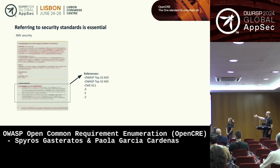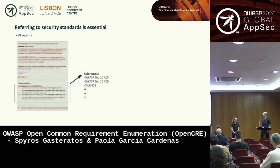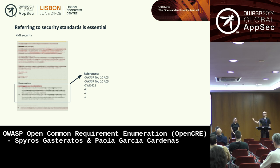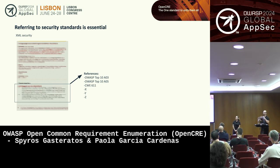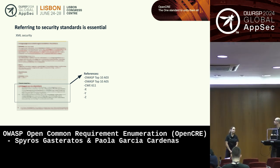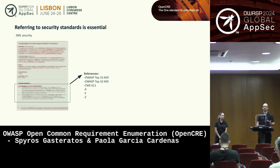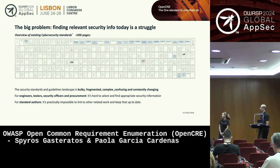Let's start from the beginning. A long, long time ago, in a chat room far away, we found a problem. Referring to security standards is essential. Every time you need to write internal security documentation or any sort of security advice, you need to say where you got this idea from. Say you write something about XML security — at the bottom you usually add some references to OWASP Top 10, CWE, or some other standard.